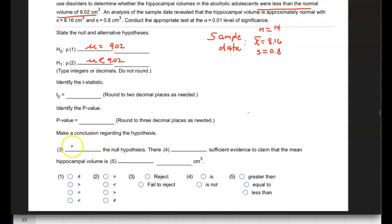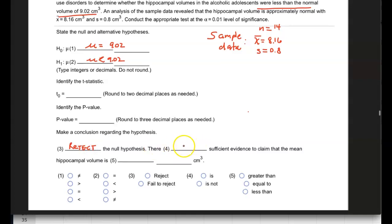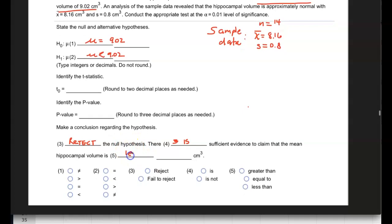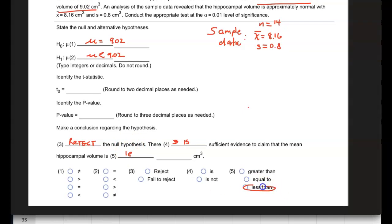And then in this case, because the p is less than alpha, which is 0.01, you reject the null hypothesis. And so there is sufficient evidence to claim the mean volume is less than, right? It's less than, and there is. That's it.